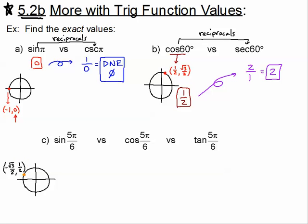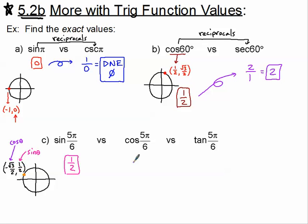Now that I know the ordered pair, if I'm looking for the sine, it's right there — the y-coordinate. The sine of 5π/6 is one-half. If we're talking about the cosine, that's the x-coordinate. You can remember this by alphabetical order: c then s, x then y. So the cosine of 5π/6 is negative square root of three over two.